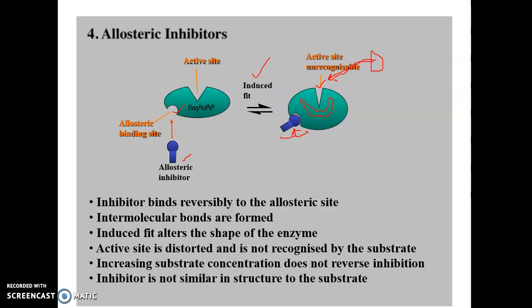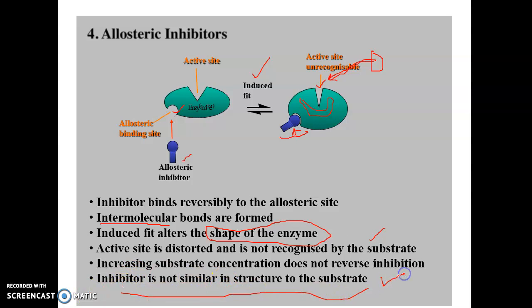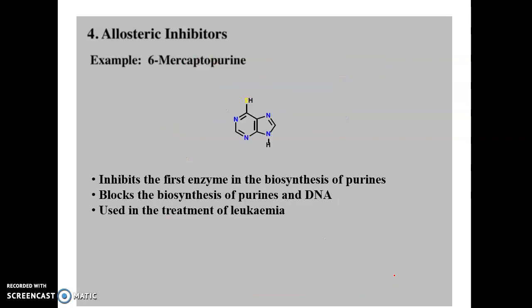In allosteric inhibition, the inhibitor binds reversibly to the allosteric site through intermolecular forces. The induced fit alters the enzyme's shape so the active site is distorted and not recognized by the substrate. Importantly, the inhibitor is not structurally similar to the substrate — there is no competition between inhibitor and substrate. The drug molecule binds only the allosteric site. An example of allosteric inhibition is mercaptopurine. The remaining examples will be continued in the next video tutorial.